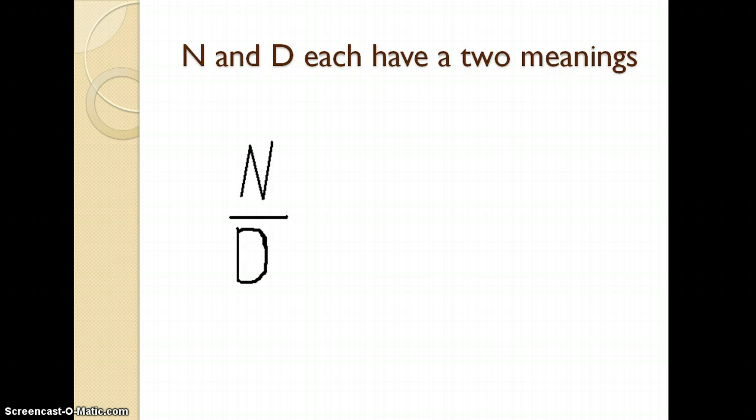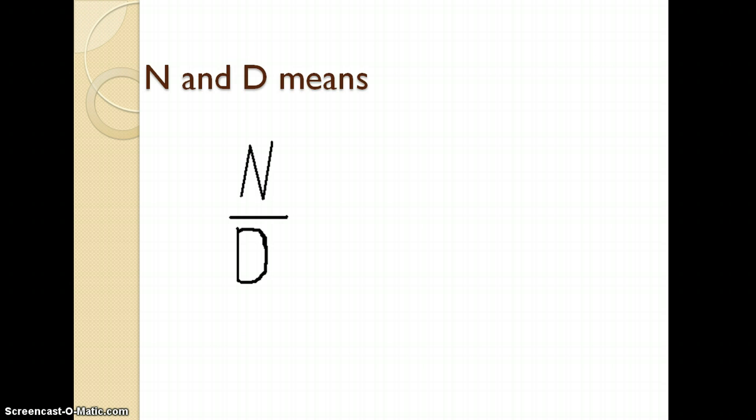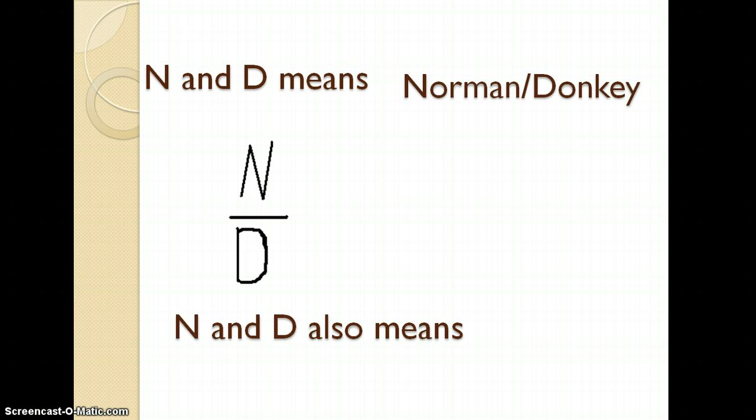The N and the D each have two meanings. They don't just stand for Norman the donkey. You may know where I'm going with this. Can you predict what they mean? The N and the D means Norman and the donkey. N and the D also means numerator and denominator. See how the numerator's on top?